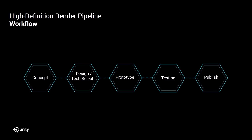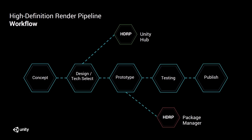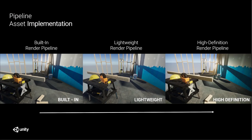The High Definition Render Pipeline general workflow is that it should ideally be picked at the start of a project, represented here at the design-tech-select stage. But you can upgrade your project by going into the new package manager introduced earlier this year, represented at the prototype stage. Beware though — once you've upgraded your projects, there's no real going back. When you launch Unity 2018.2, you would pick one of them and then the world's your oyster.